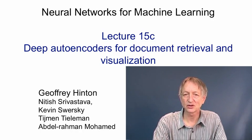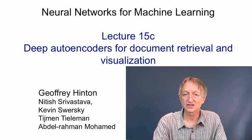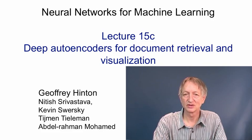Using a big database of documents, we showed that 10 components extracted with a deep autoencoder are actually worth more than 50 components extracted with a linear method like latent semantic analysis. We also showed that if you make the code very small, having just two components, you can use those two components for visualizing documents as a point in a two-dimensional map, and this works much better than just extracting the first two principal components.